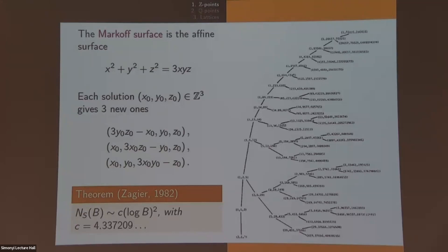An example where you can do a lot more — which I'm sure is familiar to some of you — is the Markov surface: x^2+y^2+z^2=3xyz. The beauty of this example is that it has a family of involutions on the surface, so if you're given any integer solution you can produce another one for free. This was put to good use by Zagier in the early 1980s, who used this tree structure of the common solutions to count how many solutions there are and to produce an asymptotic formula — it grows like (log B)^2. We're dealing with very sparse sequences of integers here, and there's been a lot of recent work on them.